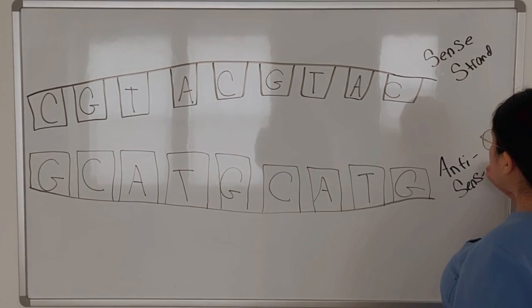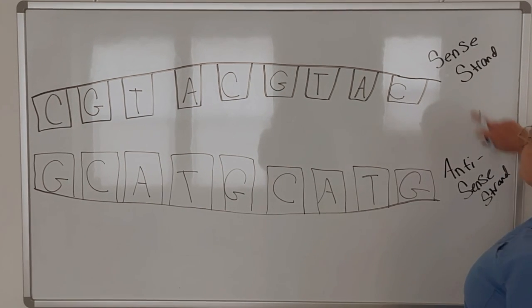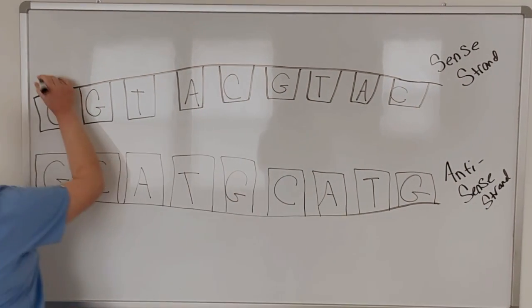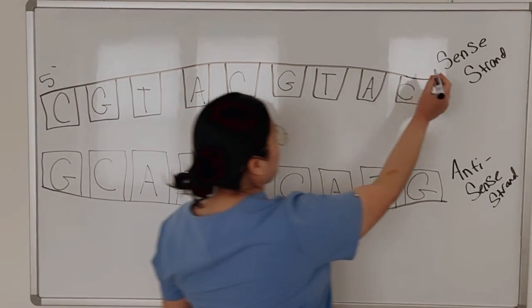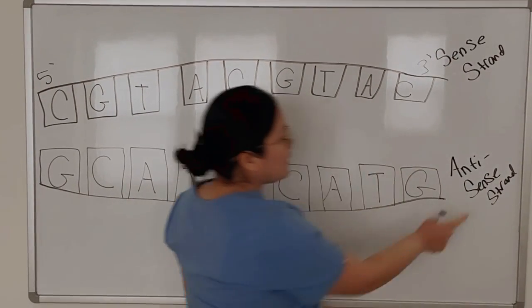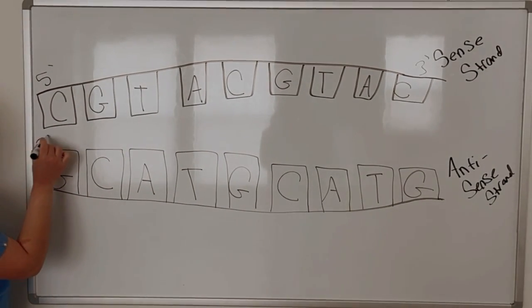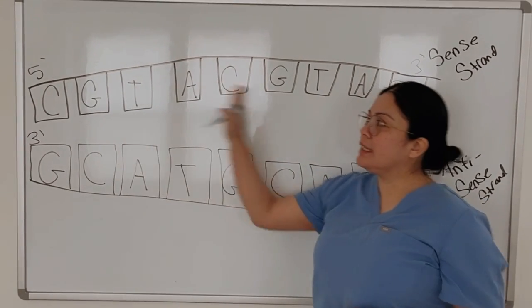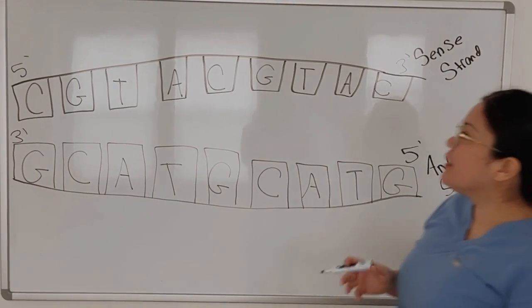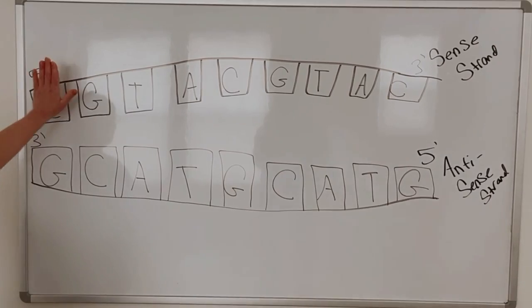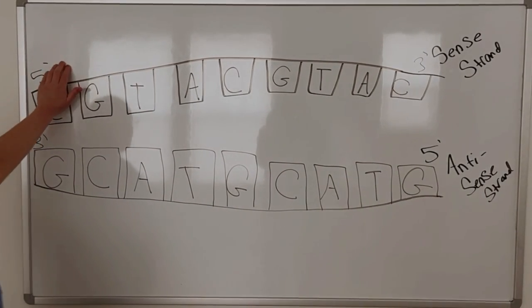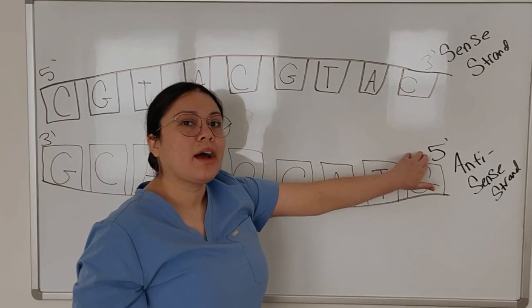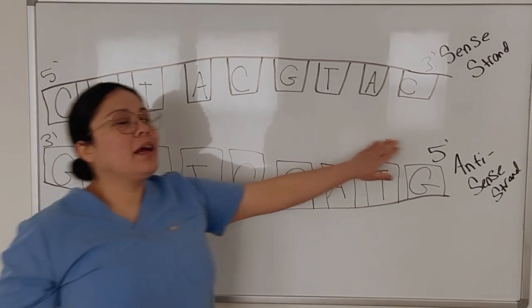So the first thing you want to do is identify the sense strand from the anti-sense strand. The sense strand is always going to run from five prime to three prime. And the anti-sense is always going to start at three prime and run to five prime. So this is why our double strand of DNA is anti-parallel because let's just say five is our starting point. Well, this sense strand starts at five and ends at three. And then our anti-sense strand does the opposite. It's anti-parallel. So it starts at three and works its way to five.